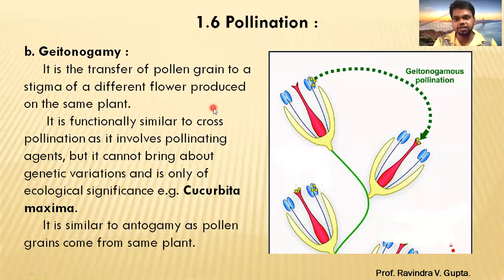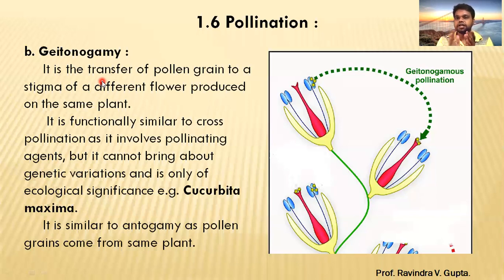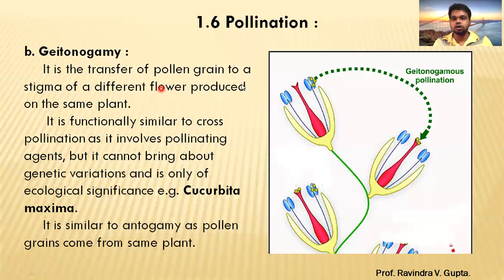Now we will see the second type of pollination. The name of this pollination is called geitonogamy. This is similar to cross-pollination in some ways. It is the transfer of pollen grain to the stigma of different flowers produced on the same plant.